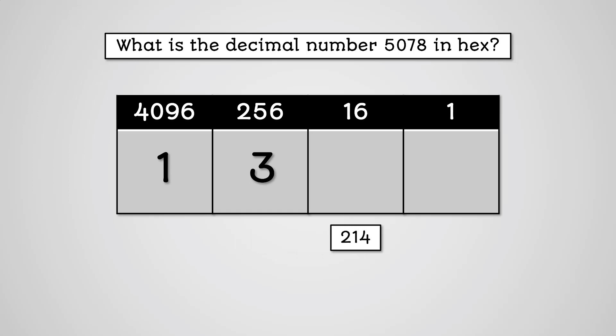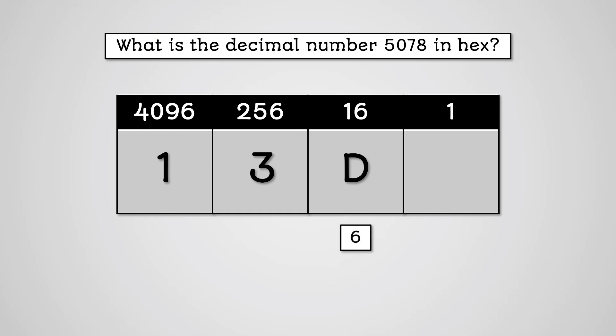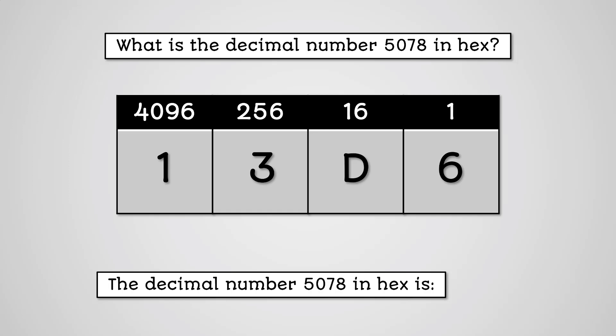Will 16 fit into 214? Yes — how many times? 13. But what is the hex code for 13? Using the table from earlier this lesson, we can see that it is D. So we put D in the 16 column. 13 times 16 is 208, so we take 208 away from 214. 214 minus 208 is 6. Will 1 fit into 6? Yes — 6 times. So we put 6 in the 1 column. The hex value for 5078 is 13D6.